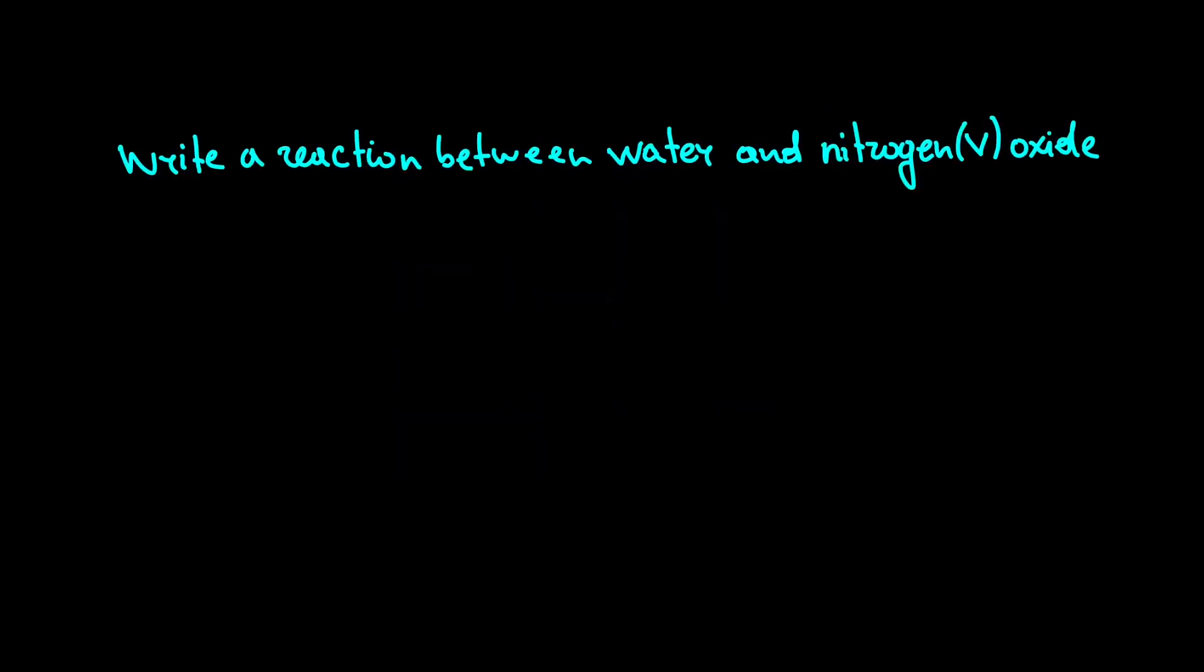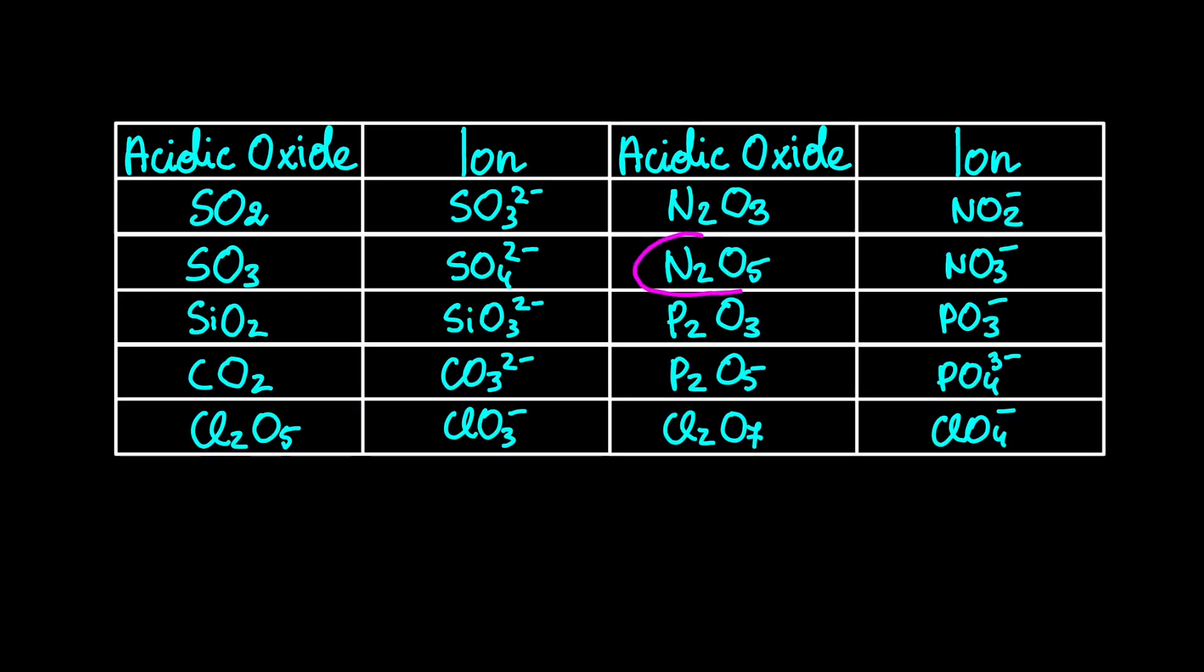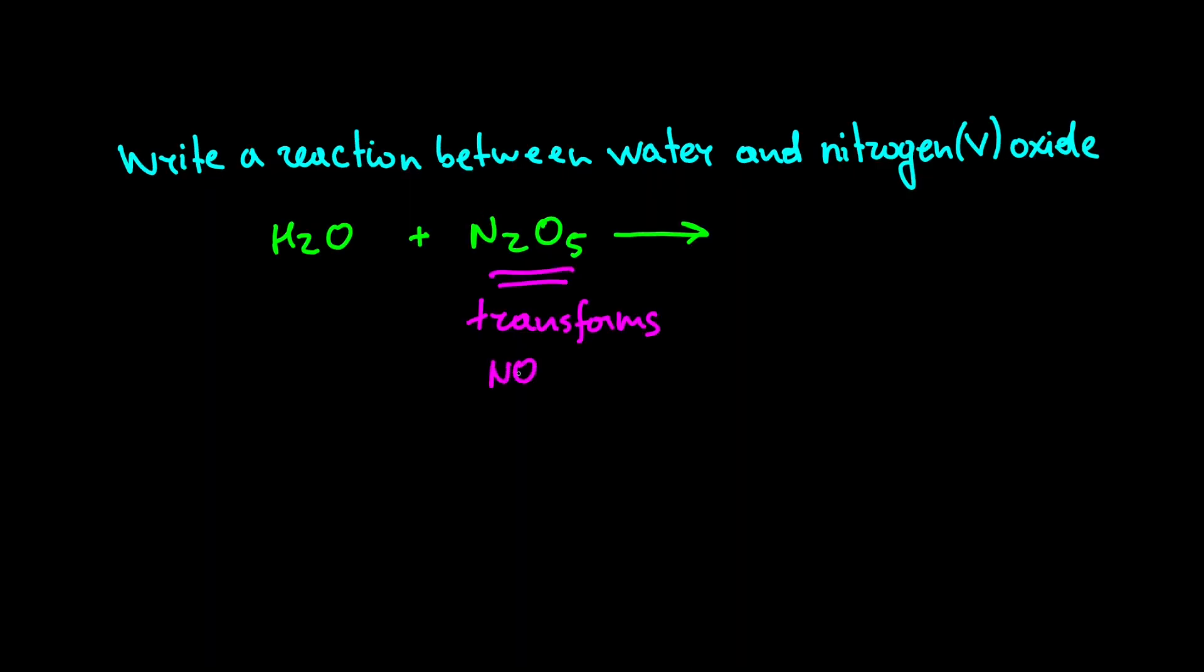In the next example, we have a water reaction with N2O5. Once again, we have acidic oxide, so we must look at the table to find out into which ion N2O5 transforms. As we can see, it is NO3- ion. Also, as I stated before, it will always combine with the first element from another compound, which is hydrogen. So we get HNO3.